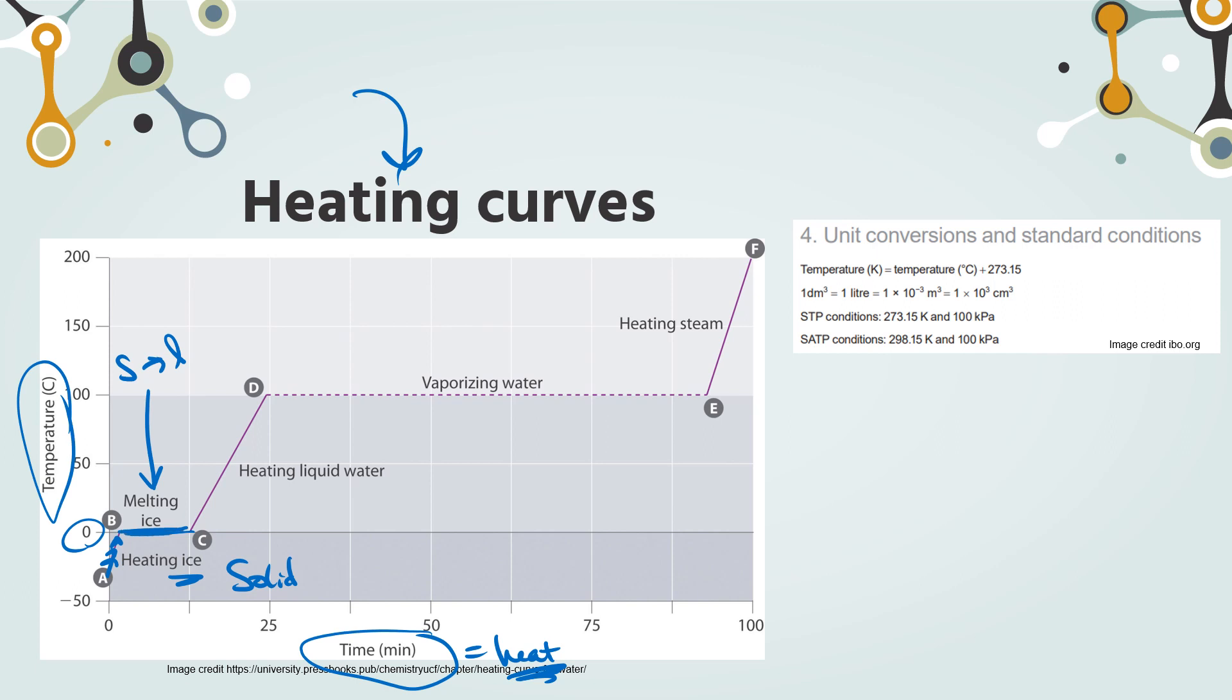So we need to add energy to convert from solid to liquid. But because we're changing the potential energy, the position of those molecules of water, we don't have an increase in temperature because temperature is related to kinetic energy. Once I have all that water, all of my ice is melted, now I have this liquid water. I've got an increase in kinetic energy as we're adding heat. And that continues until we get to, you guessed it, the boiling point of water.